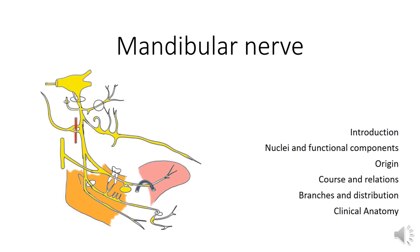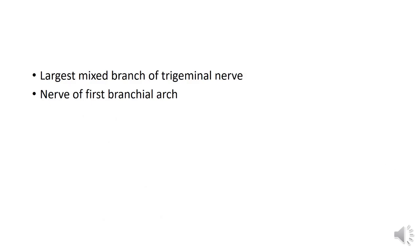Welcome back to channel Dimensions of Anatomy. In this video we will be discussing the mandibular nerve, which is an important topic exam-wise, more so for dental students, because the mandibular nerve supplies some of the structures which dental surgeons take care of. We will be dealing with the mandibular nerve under the following sections: nuclei and functional components, origin, course and relations, branches and distribution, and finally the clinical anatomy.